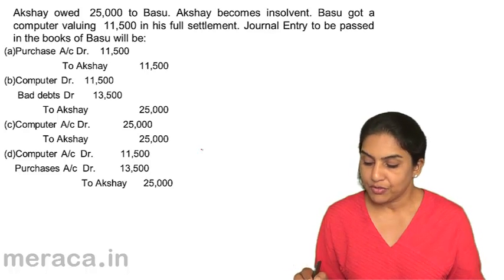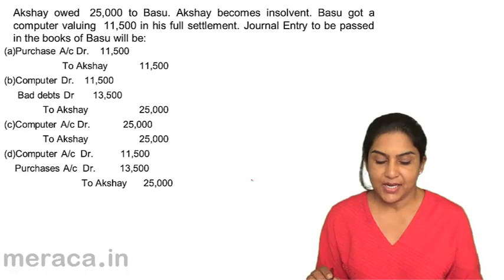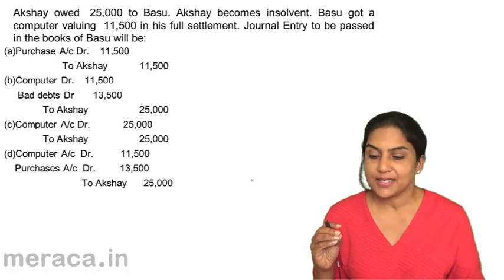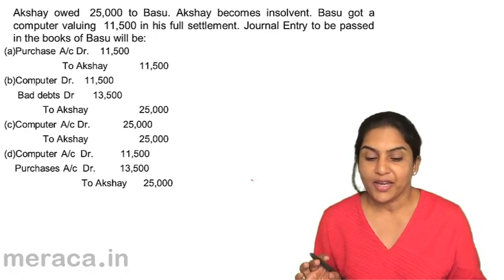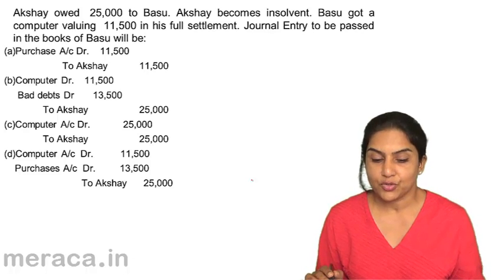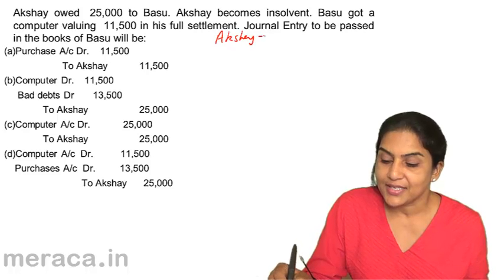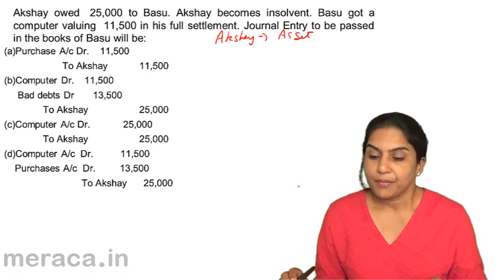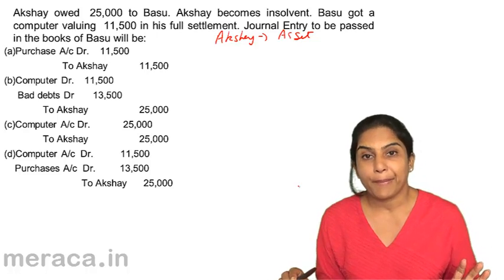What happens in the books of Basu? Options A, B, C, D have been given. Let us analyze what the entry should be in the books of Basu. In the books of Basu, Akshay is actually an asset, a receivable. He owed 25,000. But now he becomes insolvent, so he is not going to pay.